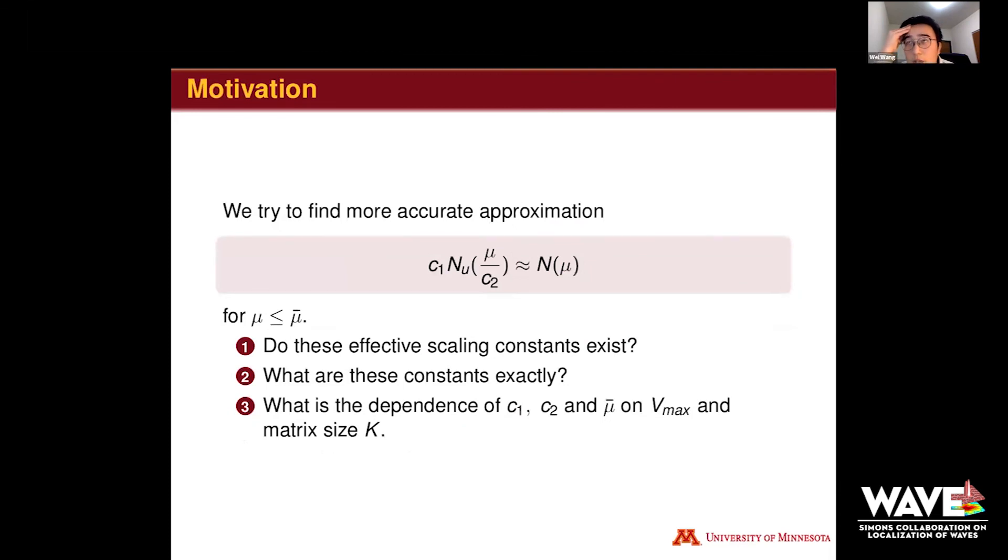Here is our motivation. Shi Wen introduced some landscape laws, because we can find that box counting and the true counting can be equivalent, or bounded from above and below with respect to some scaling constant. But we want to investigate it more accurately, more clearly. We're trying to find more accurate approximations, because c1 times N_u(μ) over c2 approximates N_μ very closely for a certain energy level μ_bar.